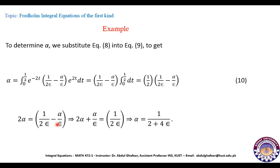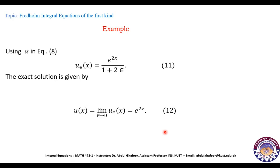From 2α = 1/(2ε) − α/ε, shifting all alpha terms to one side: 2α + α/ε = 1/(2ε). Taking the LCM and simplifying gives alpha = 1/(2 + 4ε). Substituting the value of alpha back into equation 8, we get: u_ε(x) = e^(2x) / (1 + 2ε).